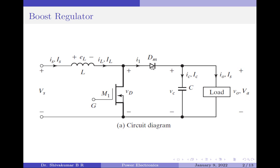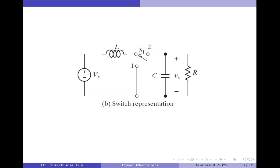The circuit for the boost regulator is shown in the figure here and is constructed using a MOSFET which acts as the control switch and a diode which acts as the uncontrolled switch. The inductor L is connected in series with the supply so that when it stores energy, the output will see a higher voltage than the input. The filter capacitor C is connected across the resistive load, and therefore the average output voltage is equal to the average capacitor voltage. The circuit can also be represented by two switches replacing the MOSFET and diode, as shown in the switching representation here.